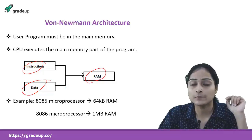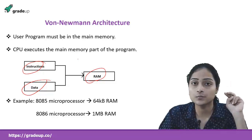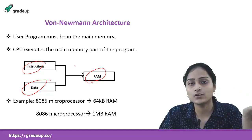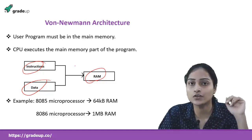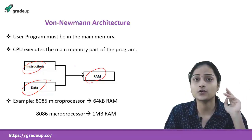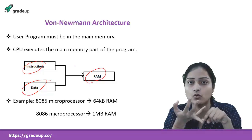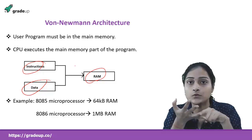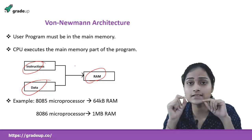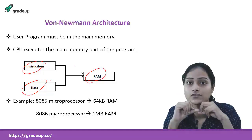Von Neumann architecture is the best idea for your PCs. Your personal computer is used for different purposes — you may write something in Notepad, play games, play music, so many things. So von Neumann architecture is best for your PCs and is the architecture we use in general life.